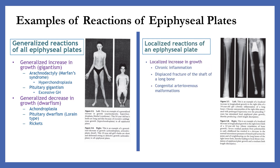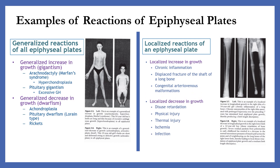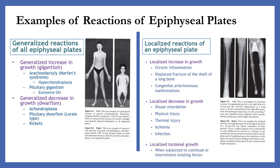Localized reactions of an epiphysial plate. The localized increase in growth includes chronic inflammation, displaced fracture of the shaft of a long bone, and congenital arteriovenous malformations. The localized decrease in growth includes disuse retardation, physical injury, thermal injury, ischemia, and infection. The localized torsional growth occurs when subjected to continual or intermittent twisting force.